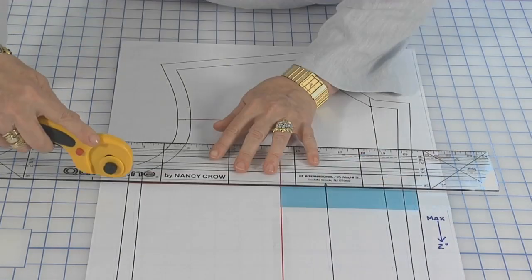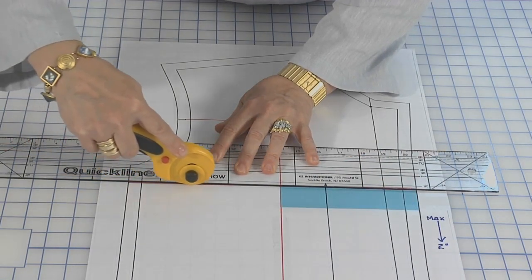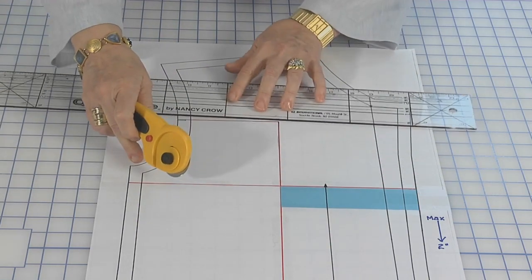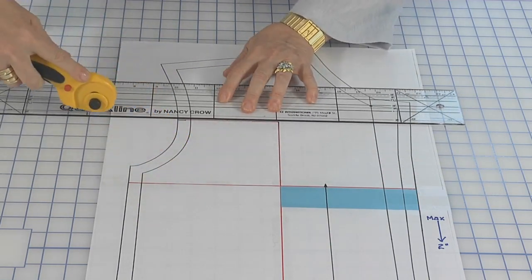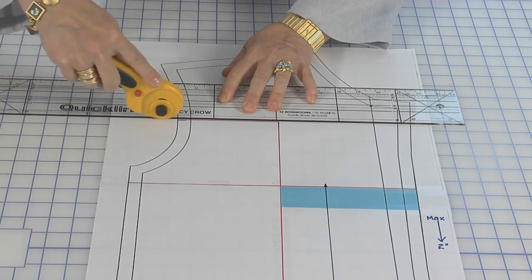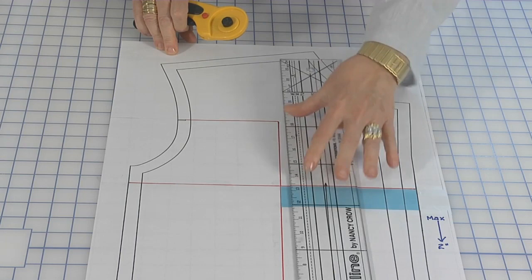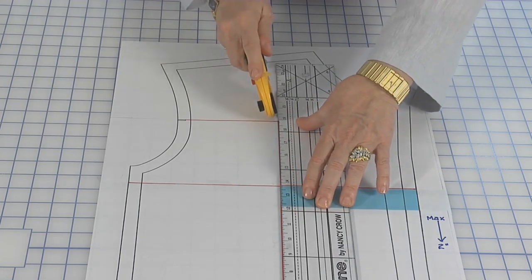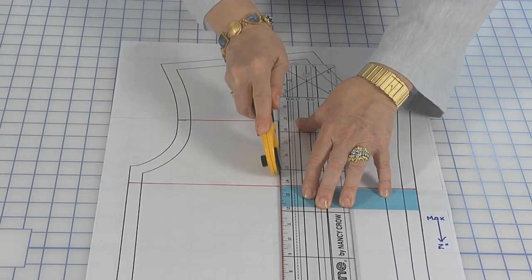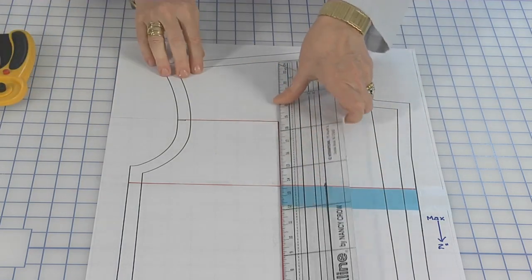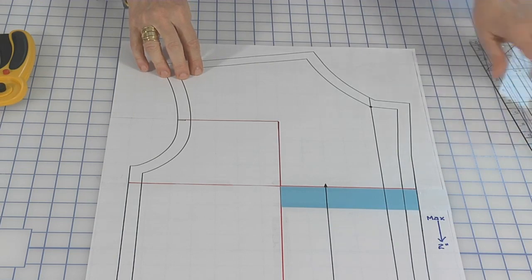We're going to continue cutting along our horizontal line, both top and bottom, and we're going to continue cutting the rest of the vertical line. I don't do these all at once because too many pieces start sliding around the table, and it's a lot easier cutting them within sections.